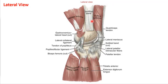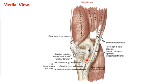In the lateral view, here's your IT band that's cut, your biceps femoris that's cut, and the lateral collateral ligament. You can see the interacting surfaces between the condyles and the meniscus. In the medial view, here's your medial collateral ligament. From the side you can also see the pes anserine, semimembranosus, semitendinosus, and gracilis and sartorius cut, all converging at that same area.